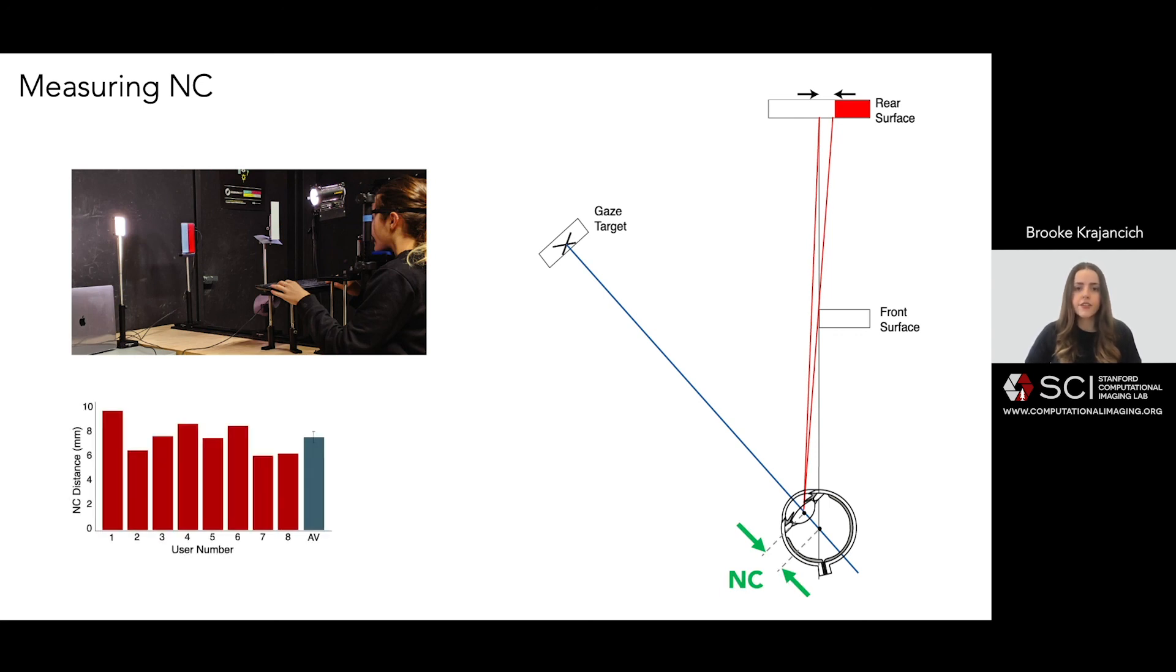Full details are included in our paper, but we measured an average distance of 7.29 millimeters for our eight participants. This was not surprising, roughly agreeing with the anecdotal evidence previously found in the literature. But what was surprising was that we observed a variation of 3.5 millimeters amongst our subjects, indicating that there may be value in measuring and accounting for individual variation.